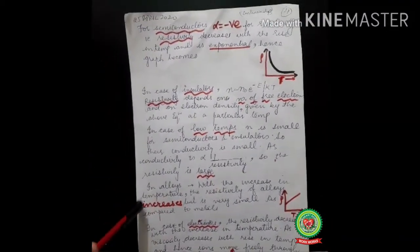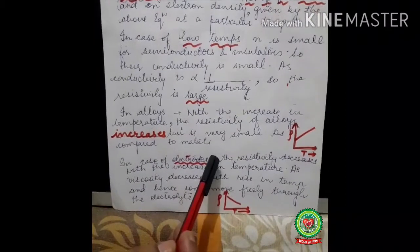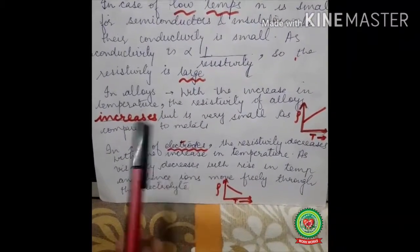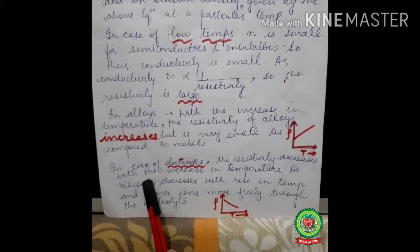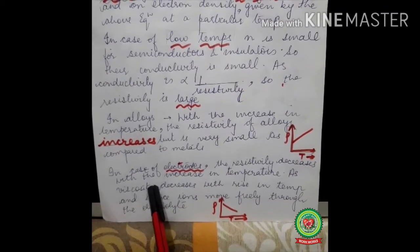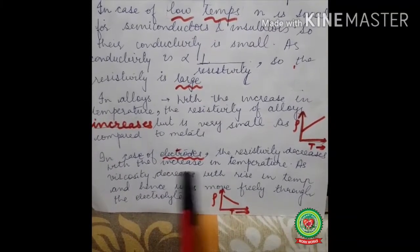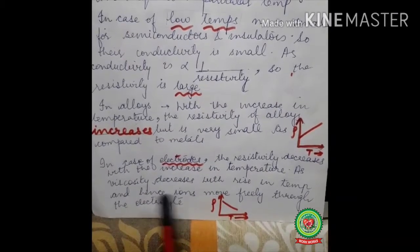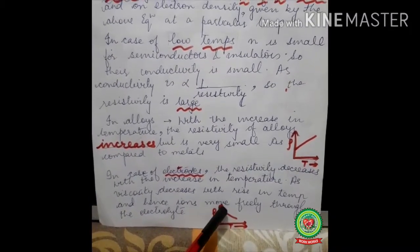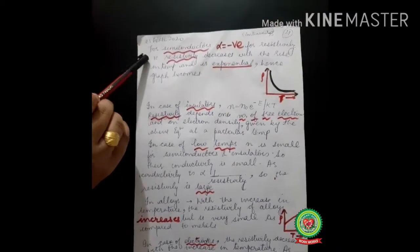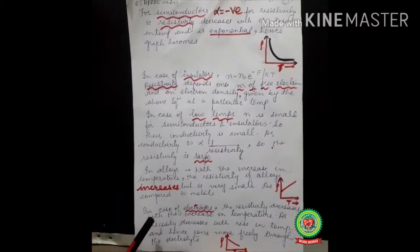For electrolytes — such as the liquid electrodes used in inverters at home — resistivity decreases with an increase in temperature. This is because viscosity, which is the resistance offered in liquid form, decreases with rising temperature, allowing electrons to move more freely from one place to another. The graph for electrolytes shows resistivity going down with temperature. I hope you have understood the effect for semiconductors, insulators, alloys, and electrolytes. Thank you, students.